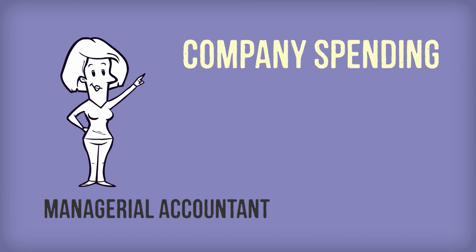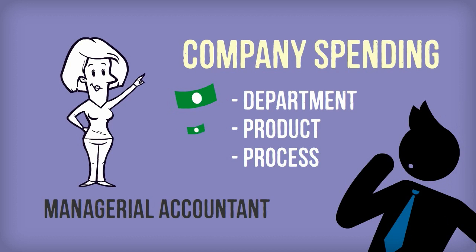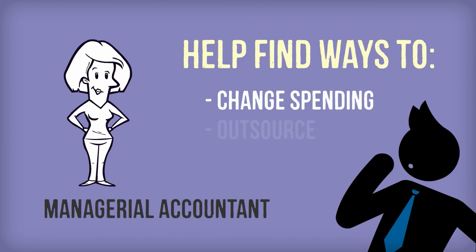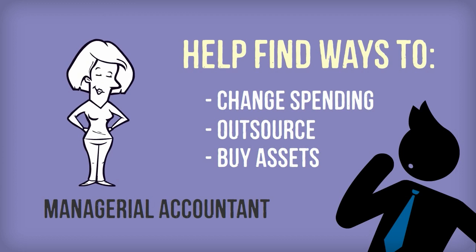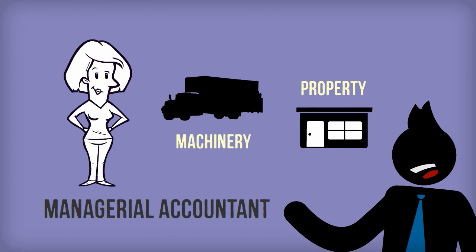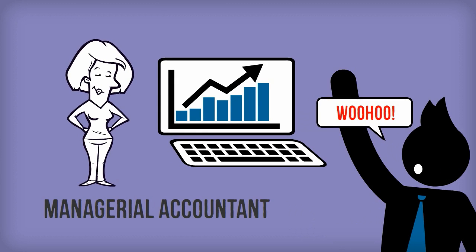Janet can break down the company's spending by department, product, or process and then tell the manager exactly how much it costs to produce the company's product or service. Using that information, she can help him find ways to change spending, outsource production, or buy long-term assets like new machinery or property. Later on, she'll provide financial analysis on these decisions to see if they were actually beneficial to the company's overall financial health.